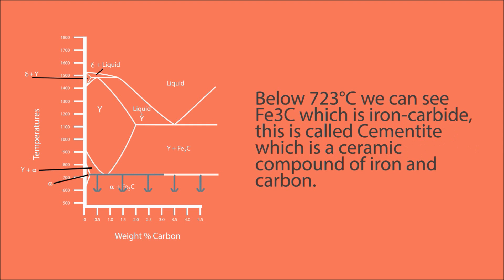Below 723 degrees Celsius, we can see Fe3C, which is iron carbide. This is called cementite, which is a ceramic compound of iron and carbon.